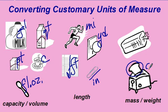A slice of bread is about an ounce. 16 ounces makes a pound, which is about the size of a loaf of bread.